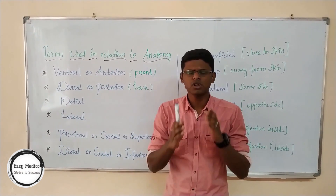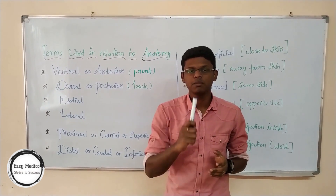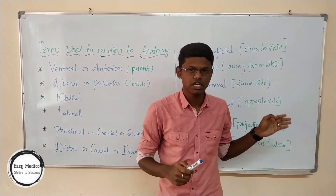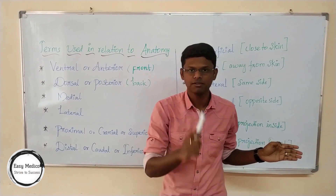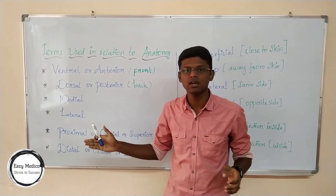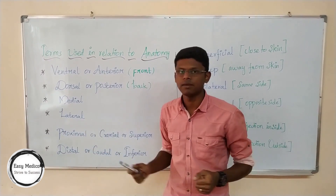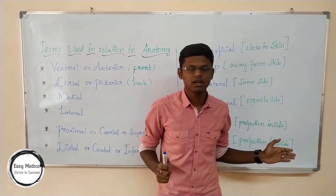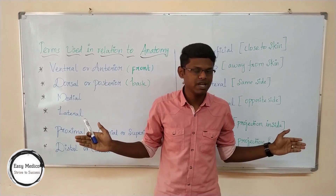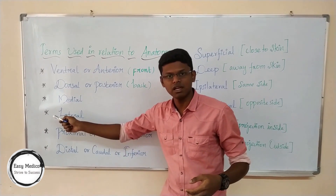Medial and lateral are opposite terms. For your reference: what is on my right will be your right as I show it. Medial is the side close to the median plane, and lateral is the side away from the median plane — the left side relative to the median plane. Right of the median plane is medial; left of the median plane is lateral. You can easily remember this: lateral 'L' stands for left.